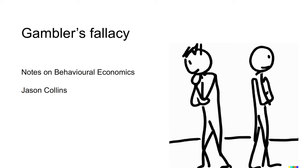Hi, I'm Jason. This video is on the Gambler's Fallacy. The Gambler's Fallacy is the false belief that an outcome not recently realized in a sequence of independent draws is more likely to occur on the next draw.